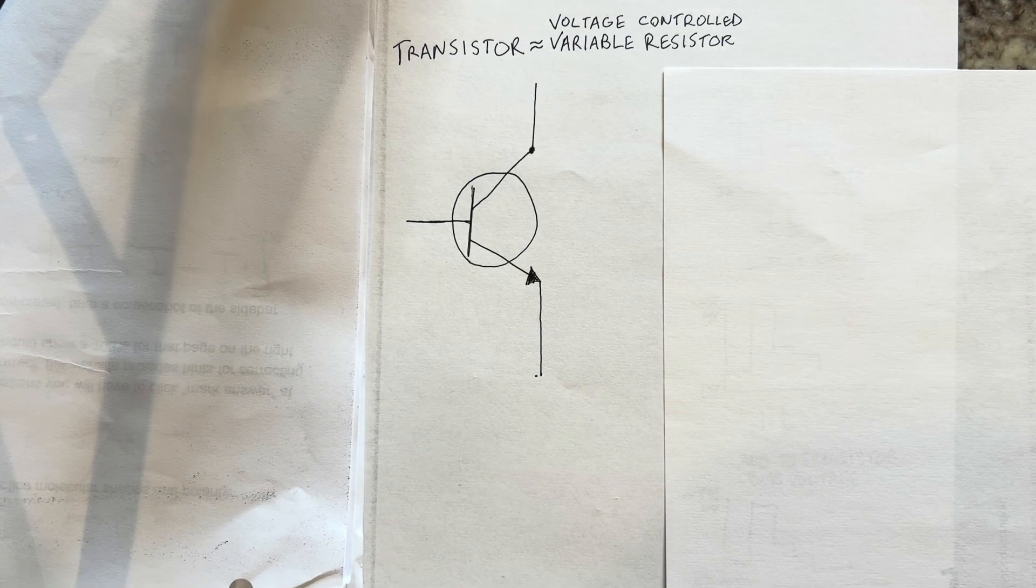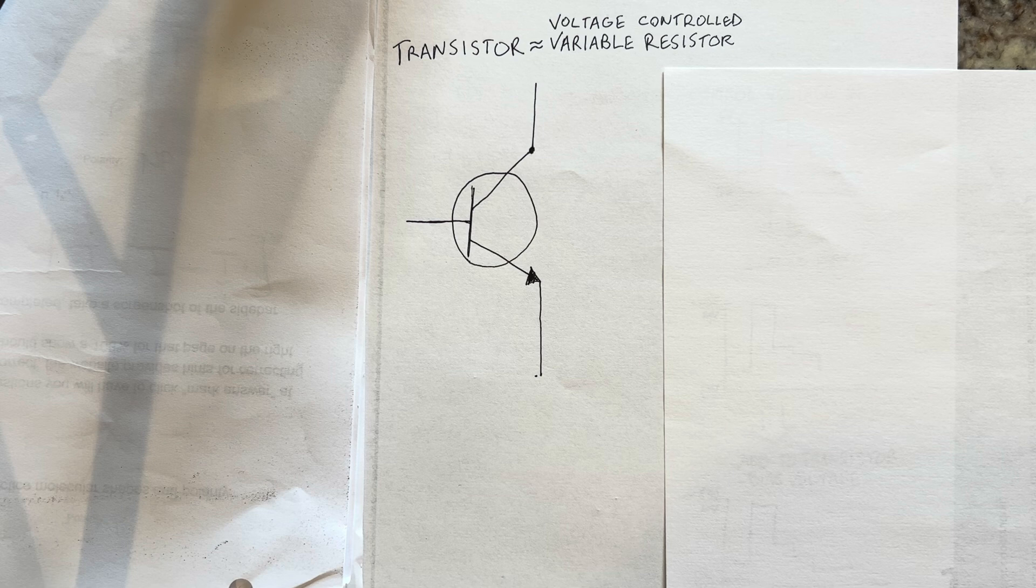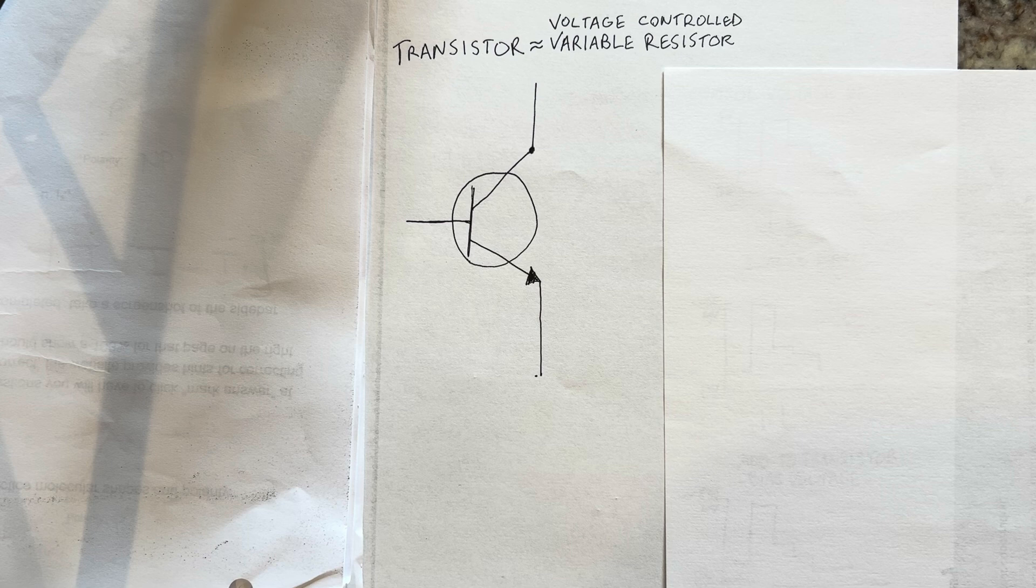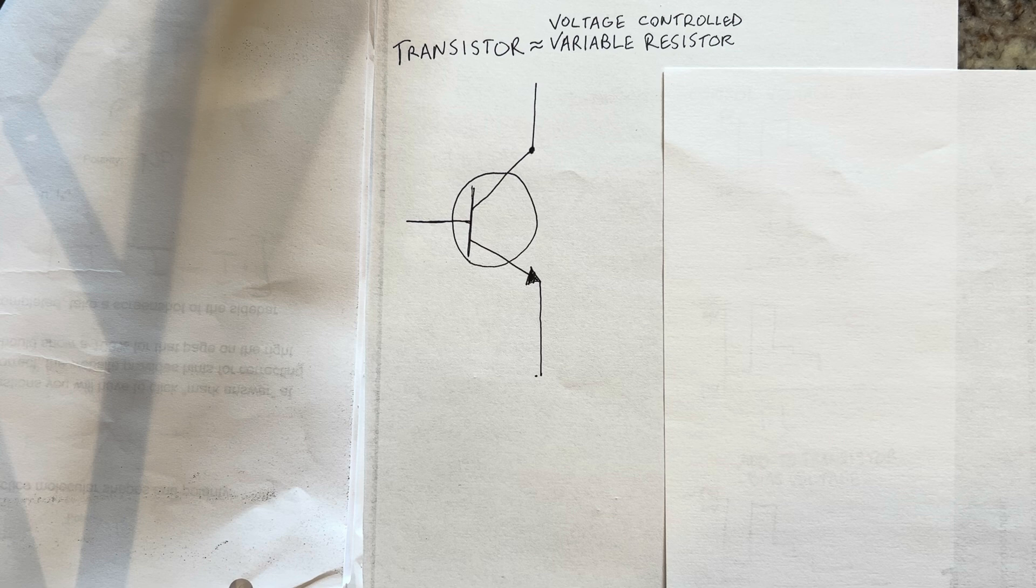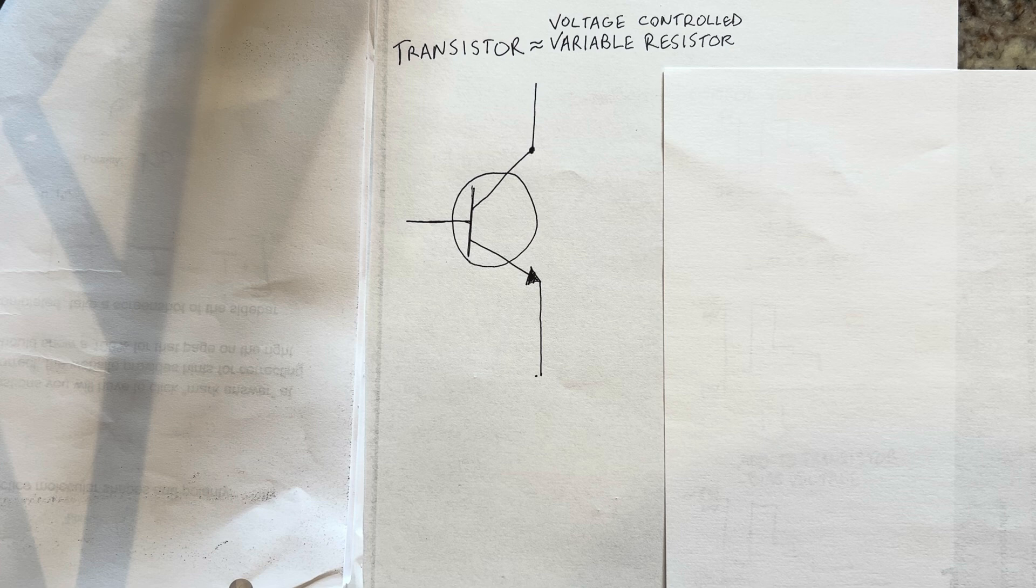How do we use it in a way where we can automate it using a control voltage? That is going to need to use a variable resistor that's voltage controlled. We're going to use a transistor as a voltage controlled resistor.